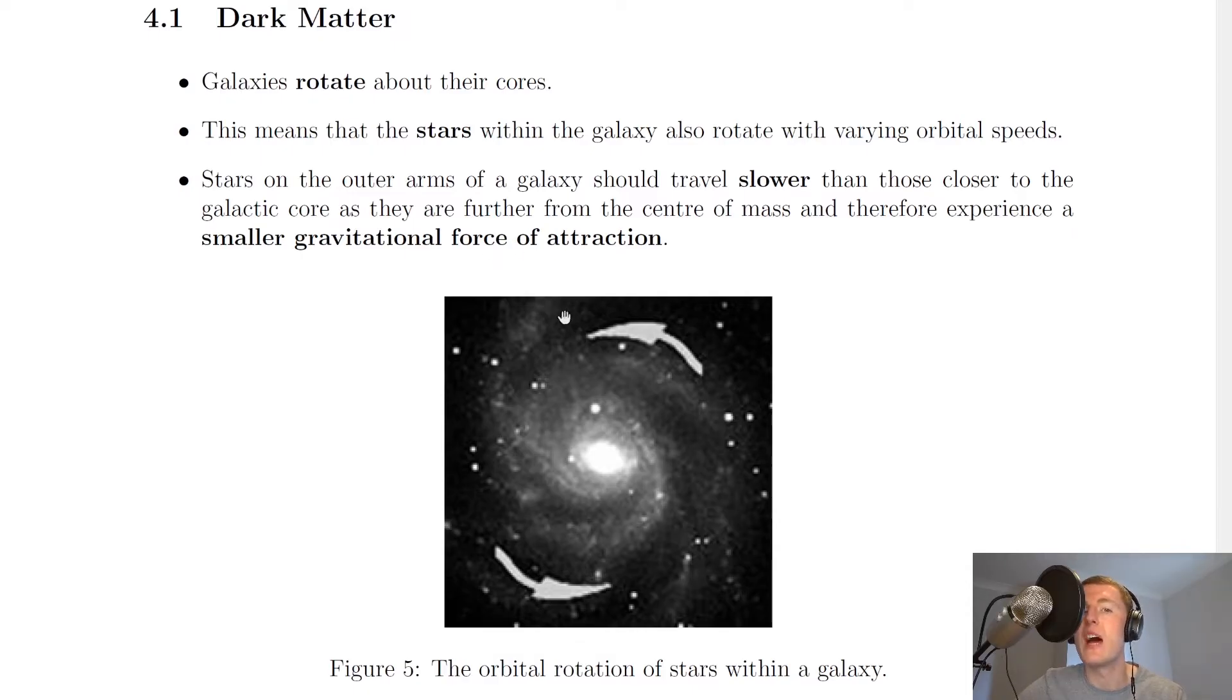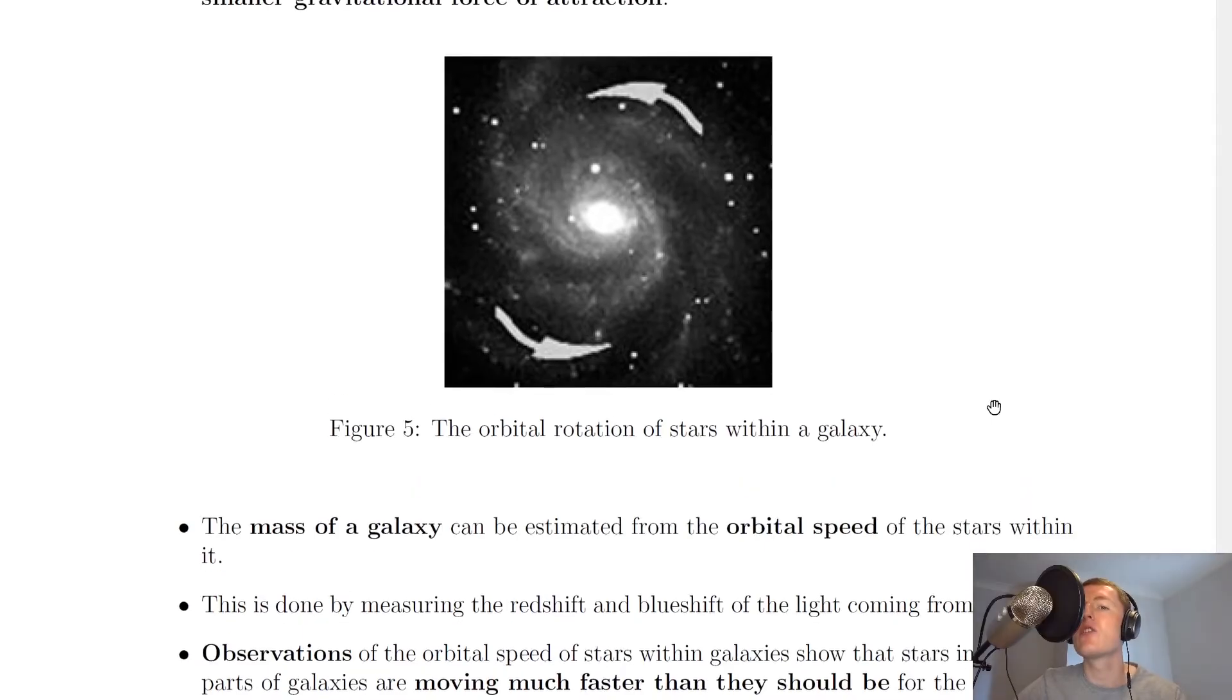So we're saying that the stars on the outer arms of the galaxy, say here and over here and so on, should travel slower than the stars closer to the core of the galaxy. And we're saying that is due to a smaller gravitational force of attraction on the arms. And that should hopefully make sense.